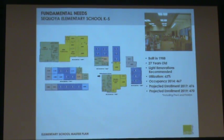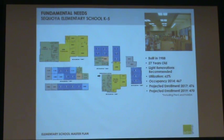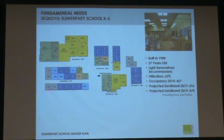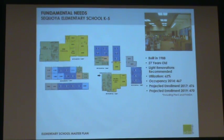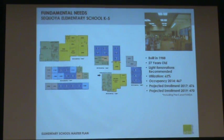Sequoia was built in 1988 — 27 years old with light renovations recommended. Utilization is 62%, with a couple of gray rooms and a fairly good amount of light blue. The occupancy as of November 2014 is 467. Projected enrollment for 2017 is 476, and goes down to 470 in 2019.